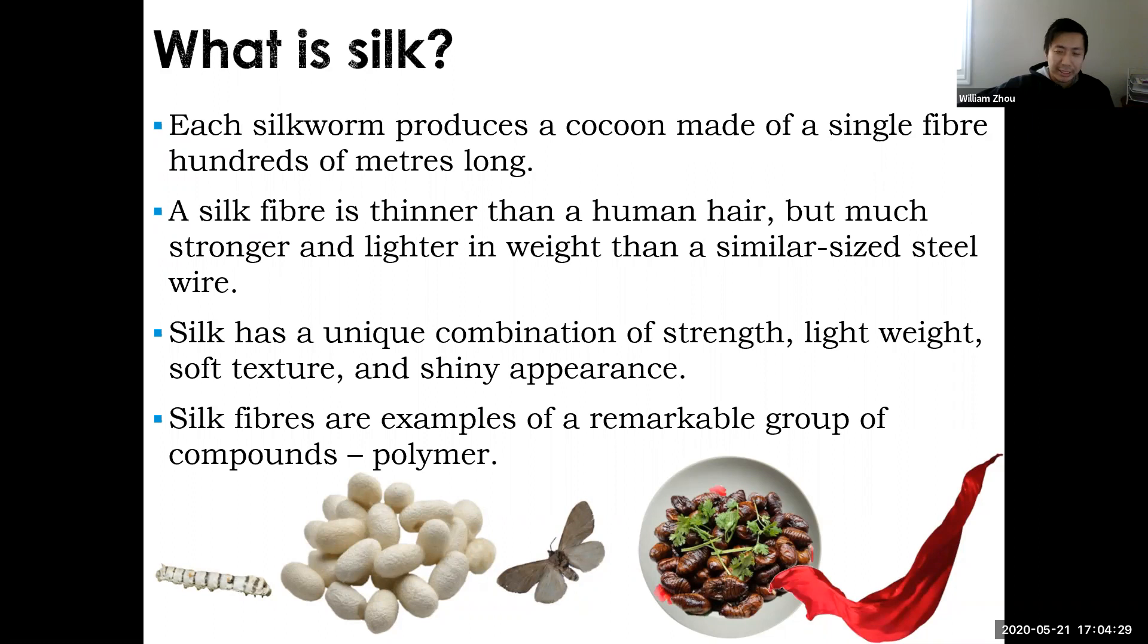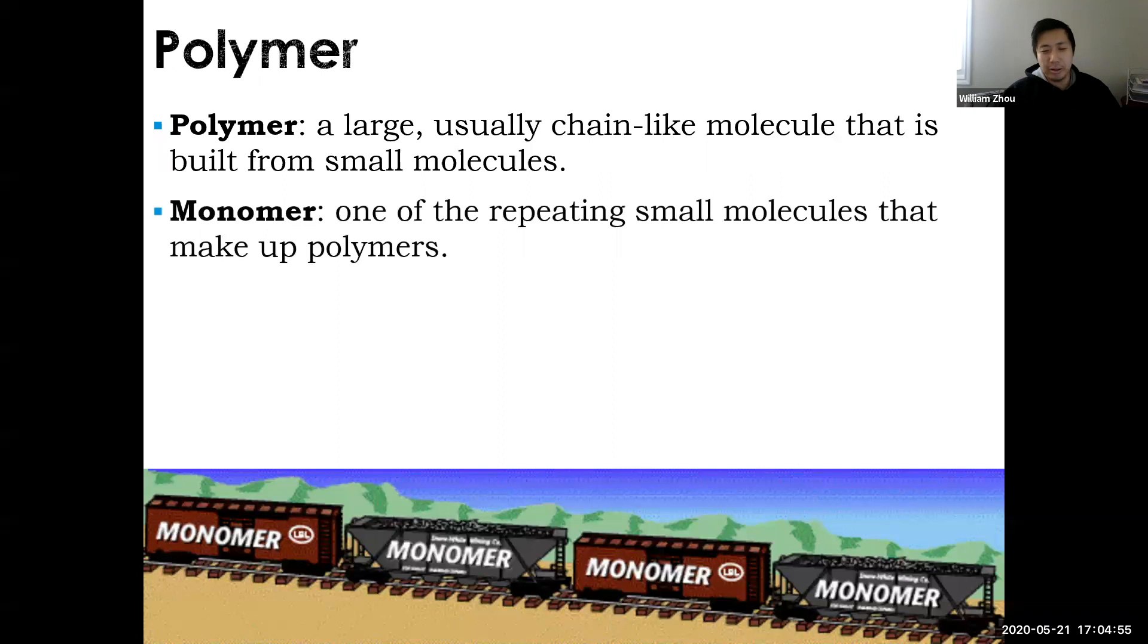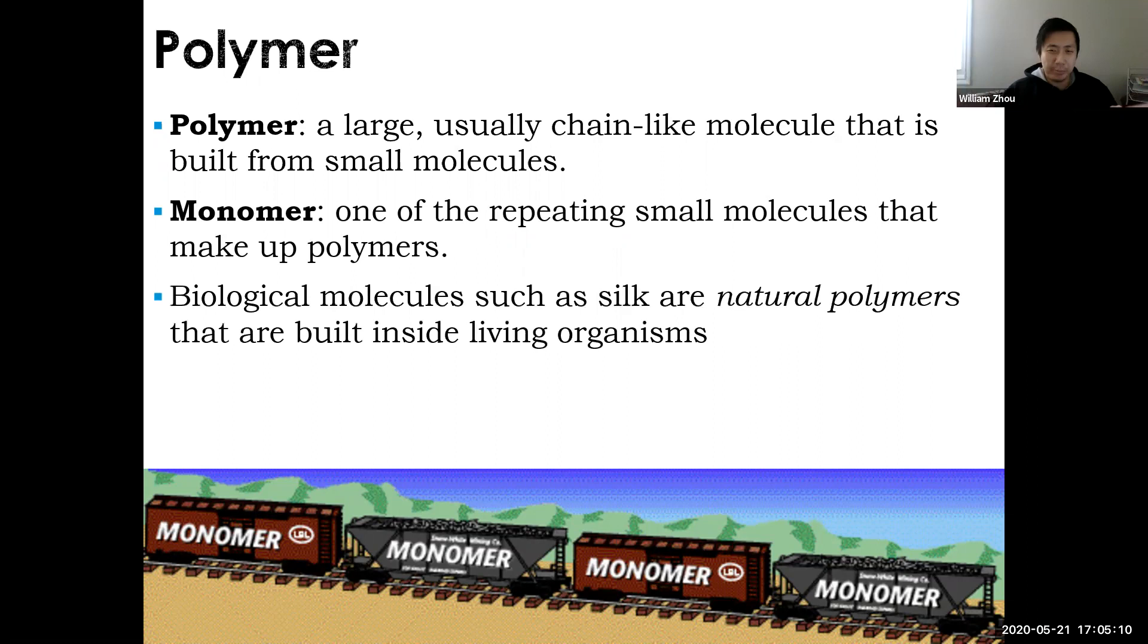So why are we talking about silk? Because silk is an example of a polymer, and the topic for today is polymers. So what is a polymer? A polymer is just a long chain of repeating smaller subunits, kind of like a train where each section of the train is a monomer connected together, and the whole train is a polymer. So the word polymer comes from poly meaning many, mer meaning unit. And monomer is mono being one, mer being unit.